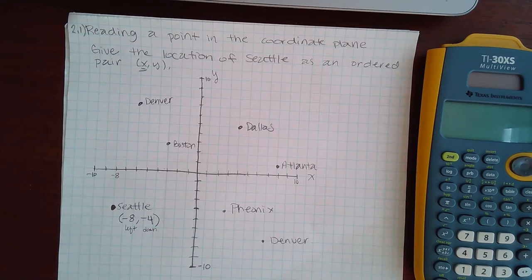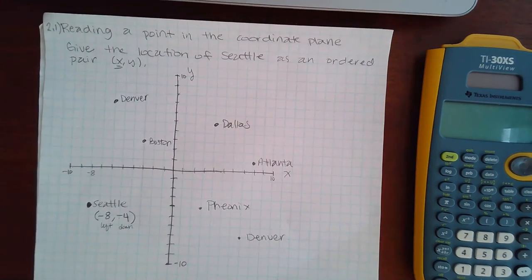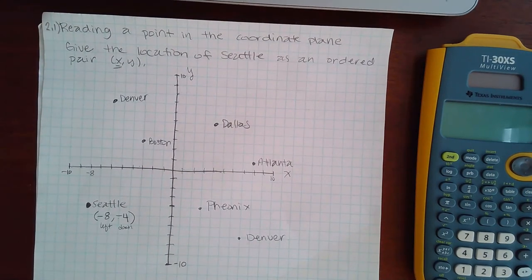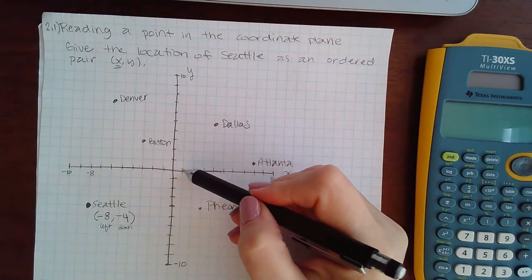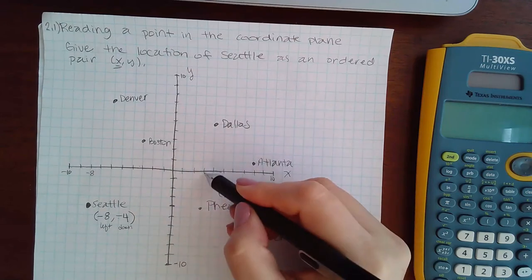And so if they had to ask you to find, let's say, the coordinates of Phoenix, then you would have gone over 1, 2, 3 to the right, which means a positive x, and then 1, 2, 3, 4 down, so a negative y.